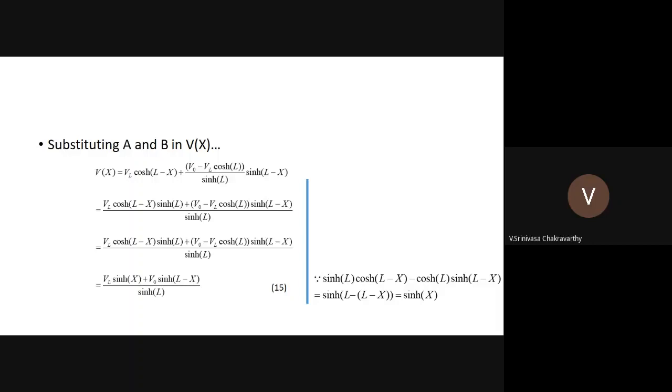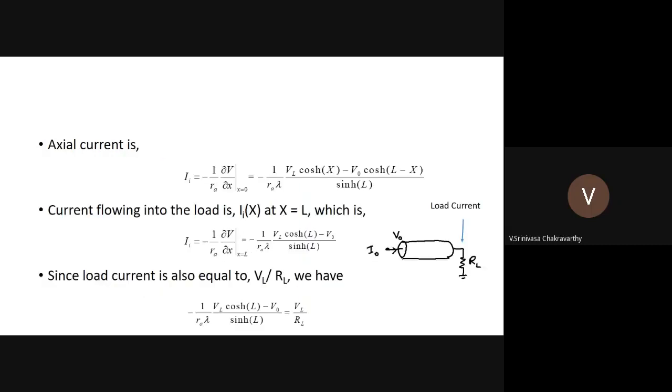After applying the hyperbolic subtraction identity, the full expression simplifies to: V(x) = [V_L·sinh(X) + V_0·sinh(L−X)] / sinh(L). This is V(x), but it is still in terms of V_L and V_0, which we don't yet know.